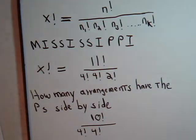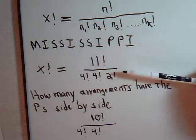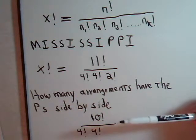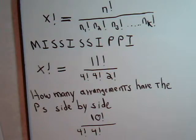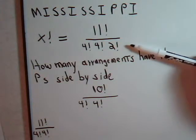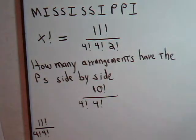So if we take the total number of arrangements and subtract this, that would give us the total number of arrangements when the p's are always separated. Let's see what we have. We have 11 factorial divided by 4 factorial times 4 factorial times 2 factorial. 2 factorial is just 2, so let's just write it as 2 times 2.